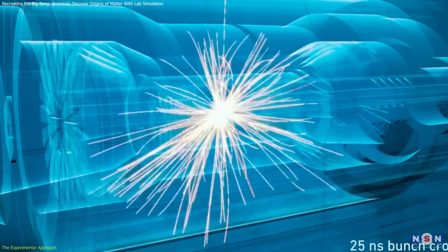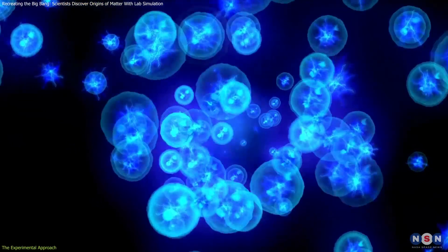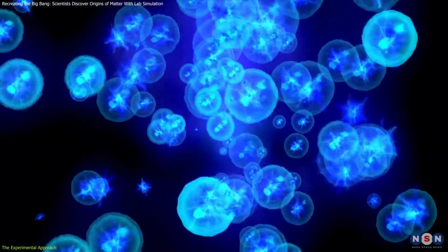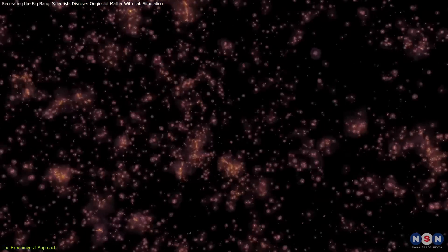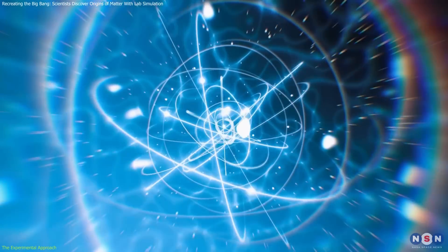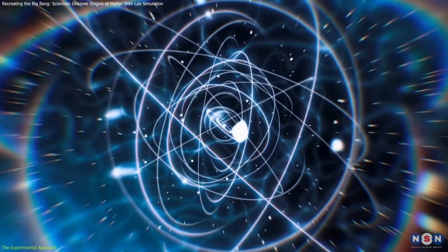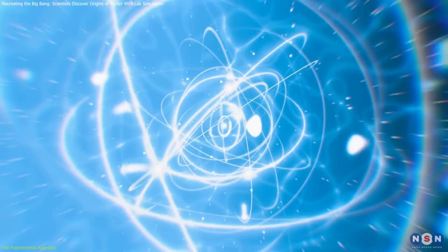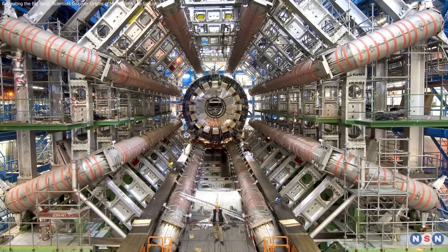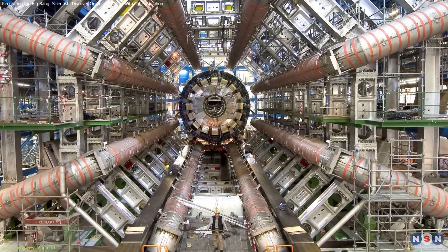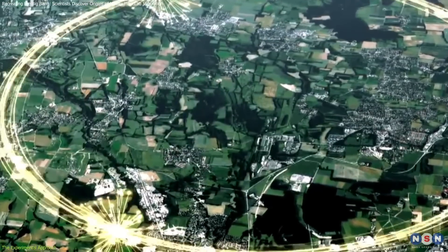These collisions produce a state known as quark-gluon plasma, where quarks and gluons are not confined within protons and neutrons but move freely. This plasma mirrors the state of the universe in its earliest microseconds and is essential for probing the strong force, which glues quarks together. The experiments depend heavily on sophisticated detectors that meticulously capture and analyze the particles generated.